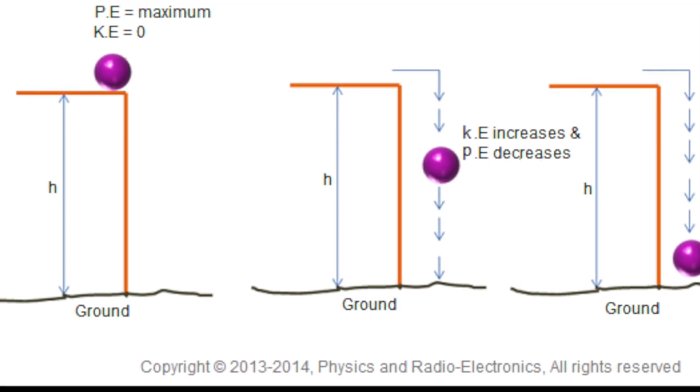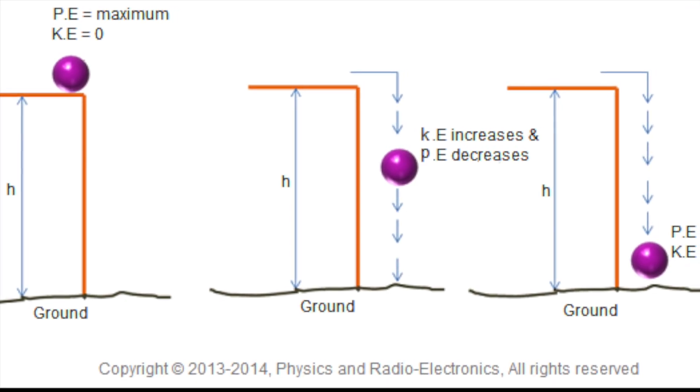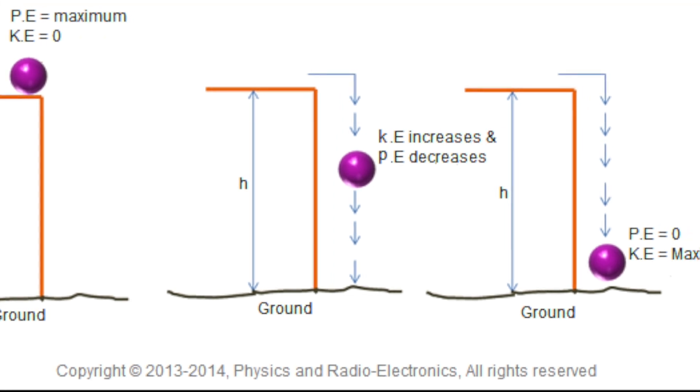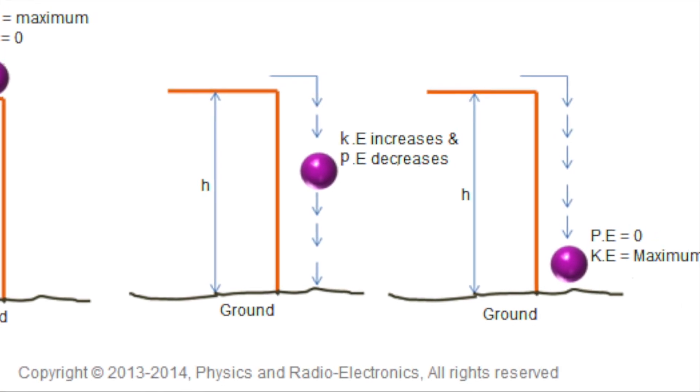The law of conservation of energy, also known as the first law of thermodynamics, states that energy cannot be created or destroyed. The total energy of a system must remain constant, but energy can be transformed from one form into another. An example of conservation of energy is when a ball is dropped from an elevated surface. The ball begins with potential gravitational energy and once dropped, that energy is converted into kinetic energy.